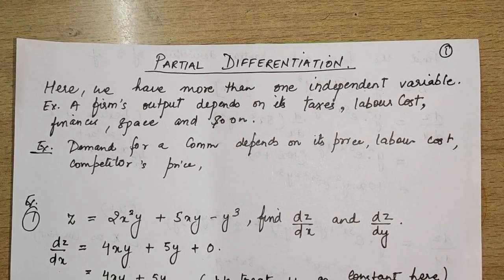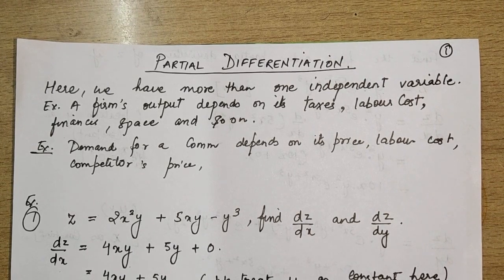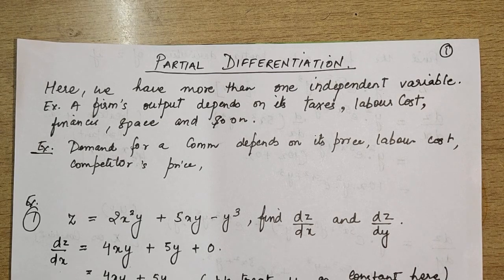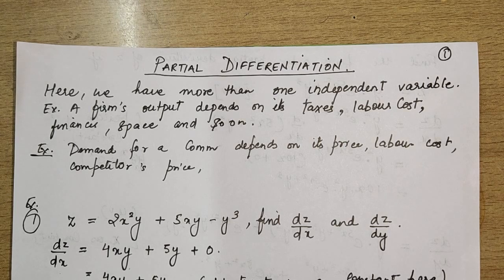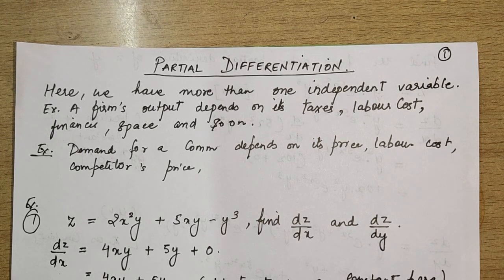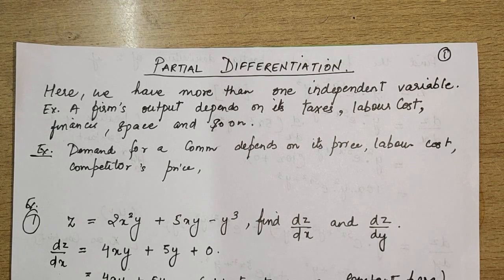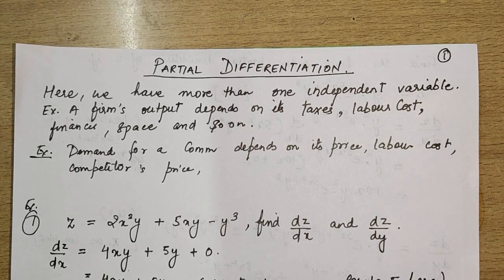Hello students, hope you all are keeping well. Today we are going to study partial differentiation. We have already done differentiation where there was one independent variable, but in partial differentiation we have more than one independent variable. For example, a firm's output depends on its taxes, labor cost, finances, space, and so on.